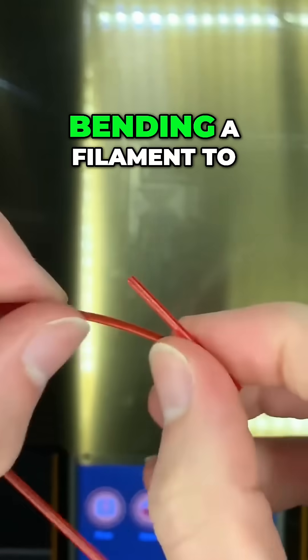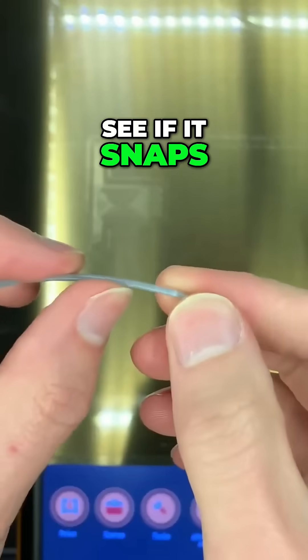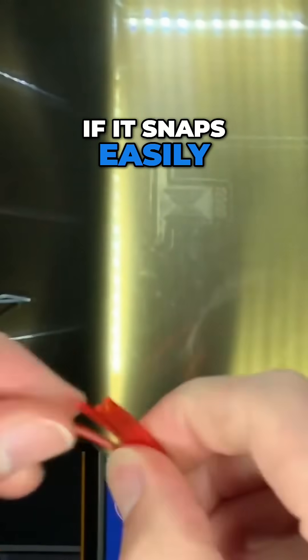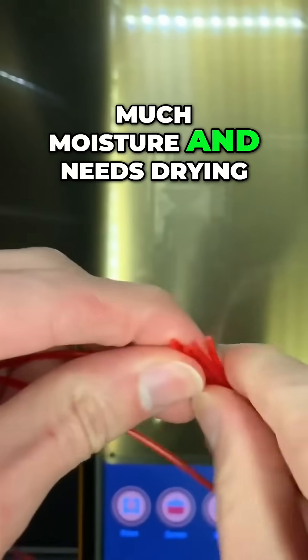The snapping method involves bending your filament to see if it snaps. If it bends easily with some play, it's most likely fine. If it snaps easily, then it's absorbed too much moisture and needs drying.